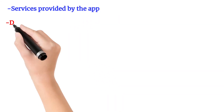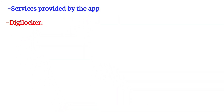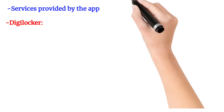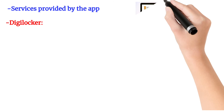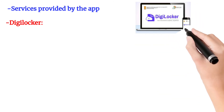What services can we look at? DigiLocker services. It stores important documents such as Aadhaar, Class 10th and 12th certificates, Community Certificates, and Driving License. These important documents can be saved in a cloud format.